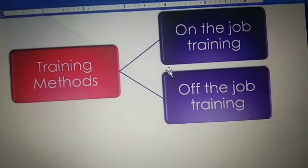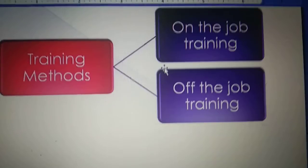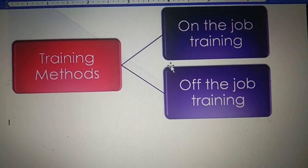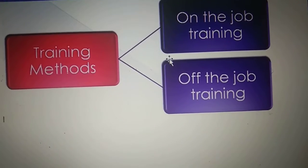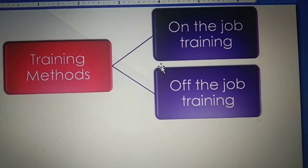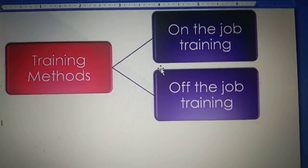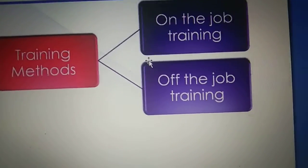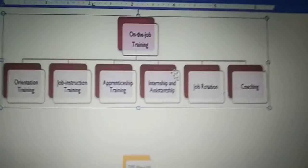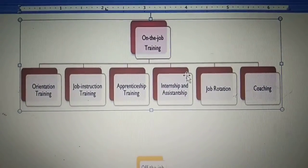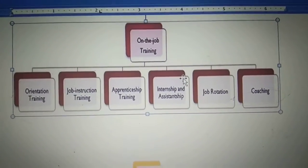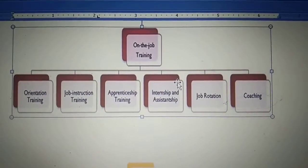For example, lecture-based training is an example of off-the-job methods, because at the time we give a lecture to provide training the employee is not working. That is why we call it an off-the-job training method. Now, when we talk about on-the-job methods, they can be divided into six parts.